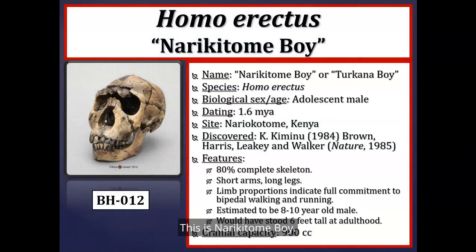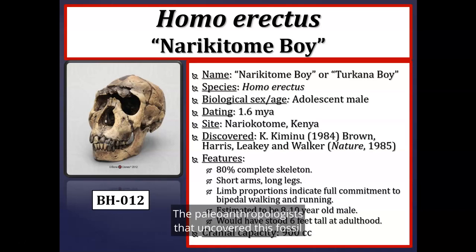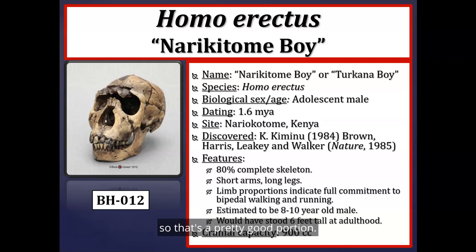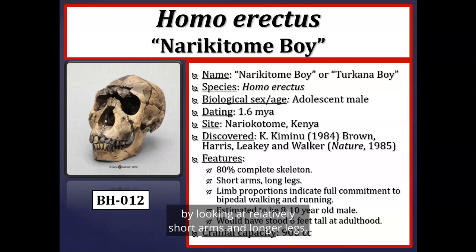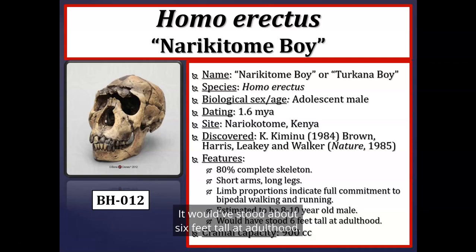Nariokotome Boy is another famous fossil attributed to Homo erectus or Homo ergaster, dating to about 1.6 million years ago, found in Nariokotome, Kenya. Paleoanthropologists recovered about 80% of the skeleton, determining locomotion from relatively short arms, longer legs, and longer angled femurs indicating commitment to bipedal walking and running. This individual was about 8 to 10 years old at death, pre-adolescent male, estimated to have stood about six feet tall at adulthood, with a cranial capacity of about 900 cc.